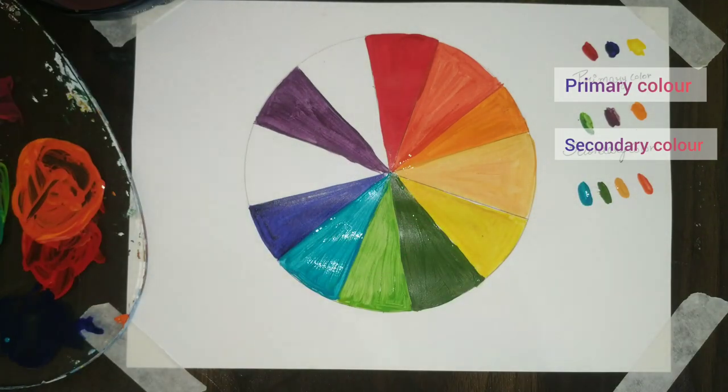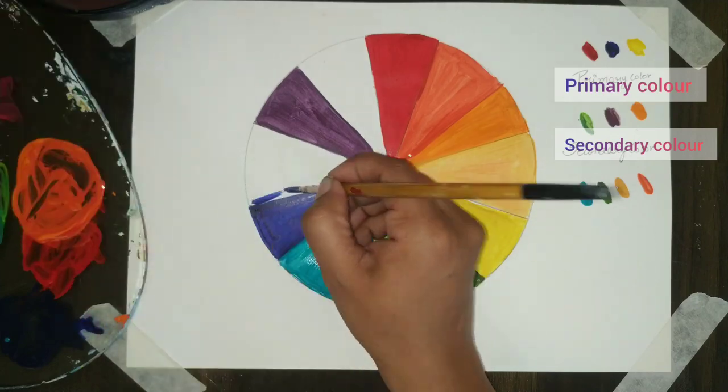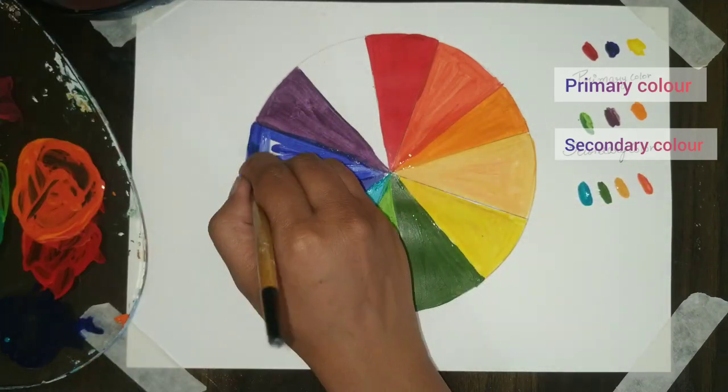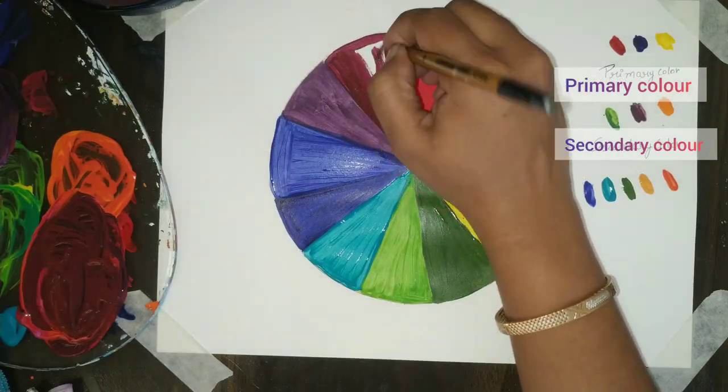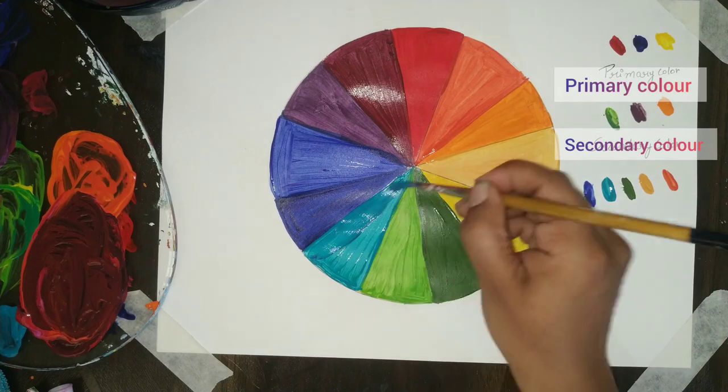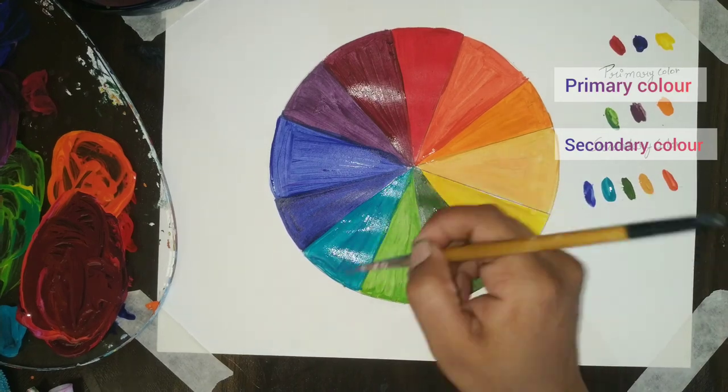Make a nice outline and fill it inside. Next one would be bluish violet or bluish purple. It means the more tone of blue and the less tone of purple in here. Next would be reddish violet or more tone of red and less tone of violet.